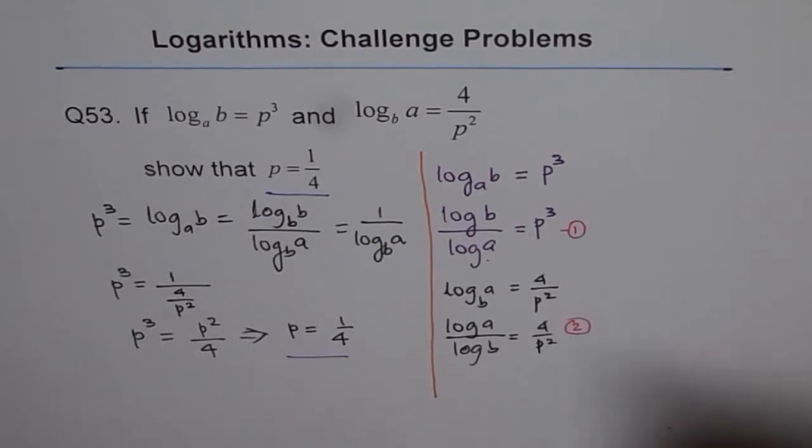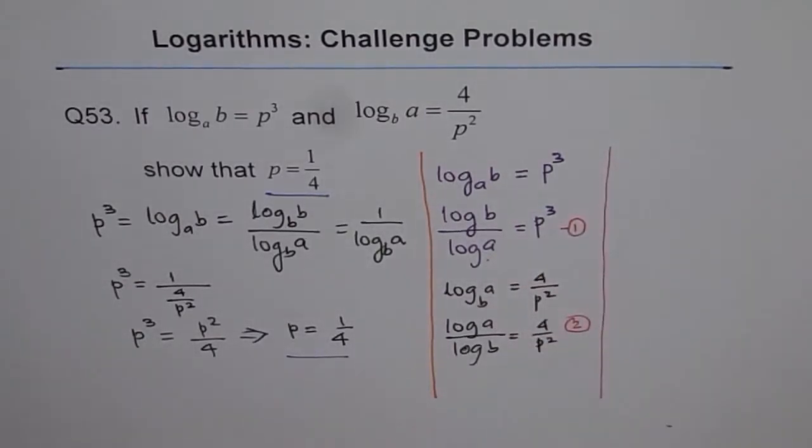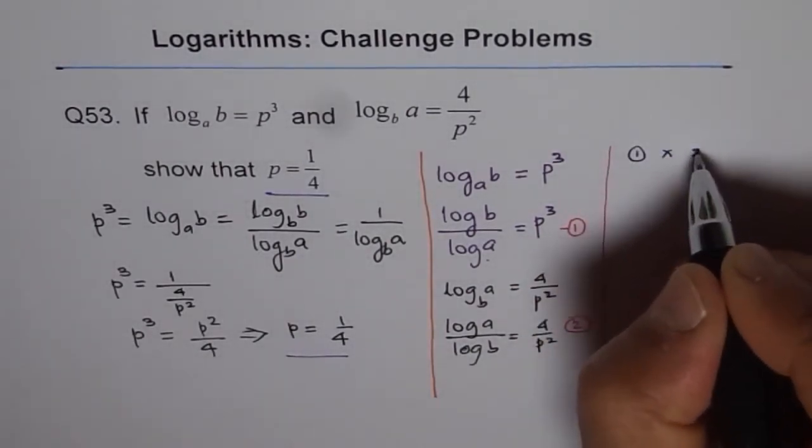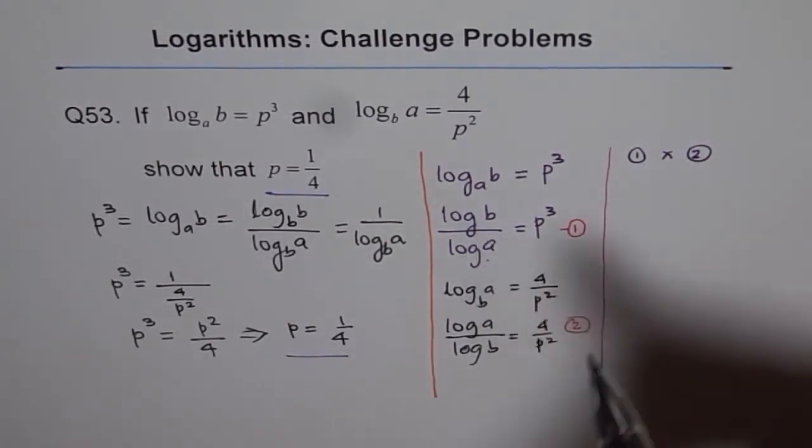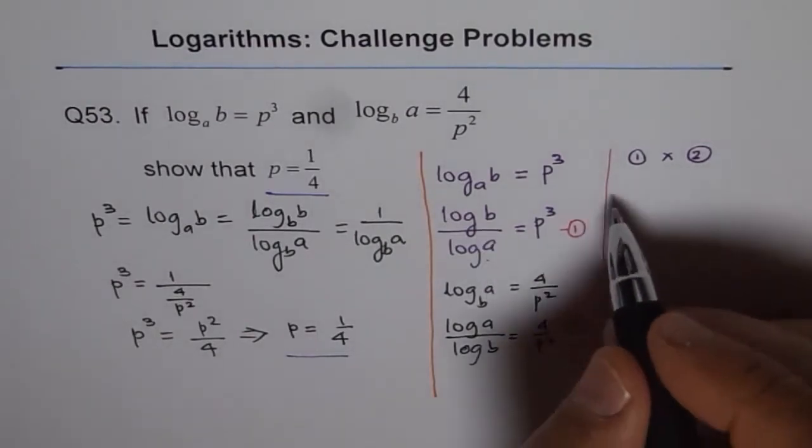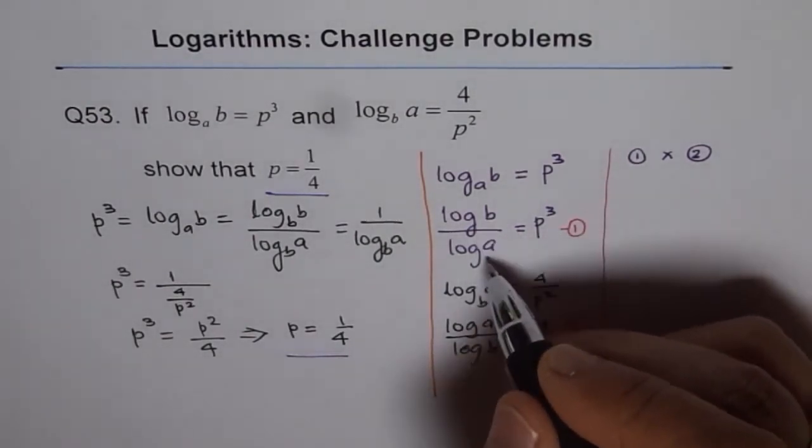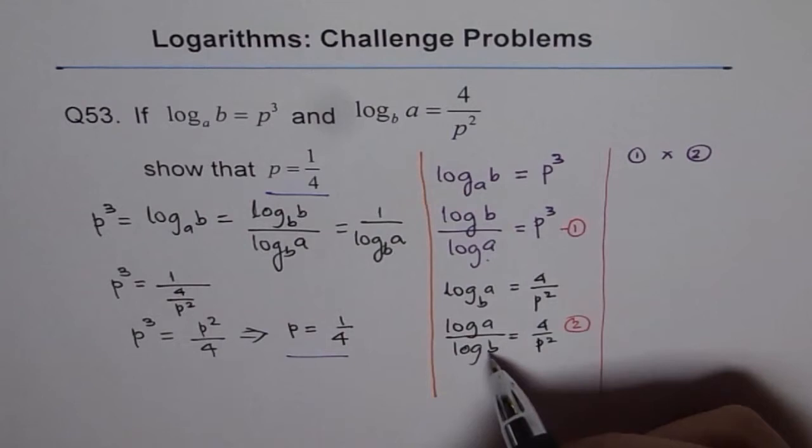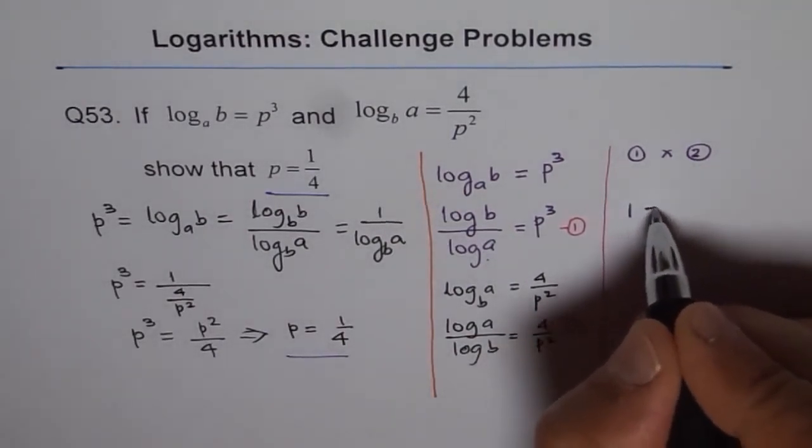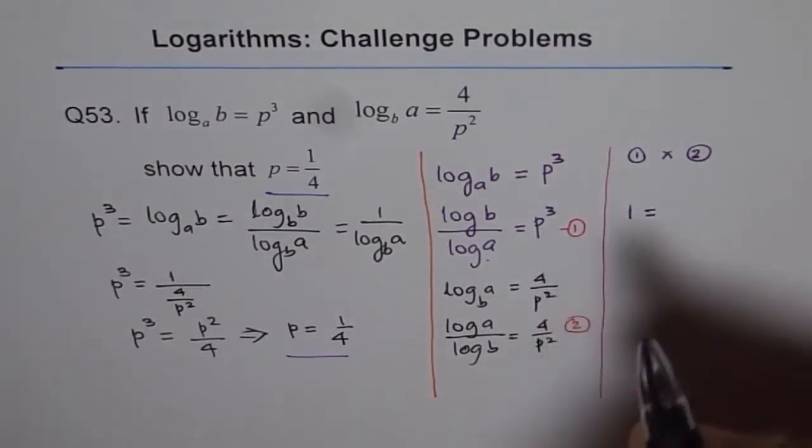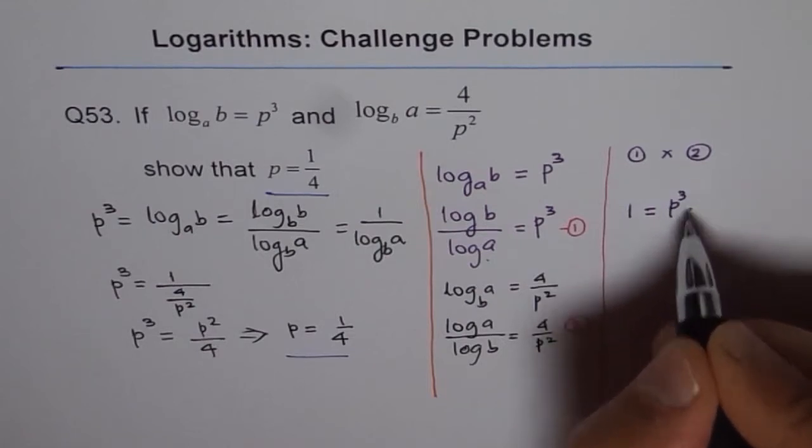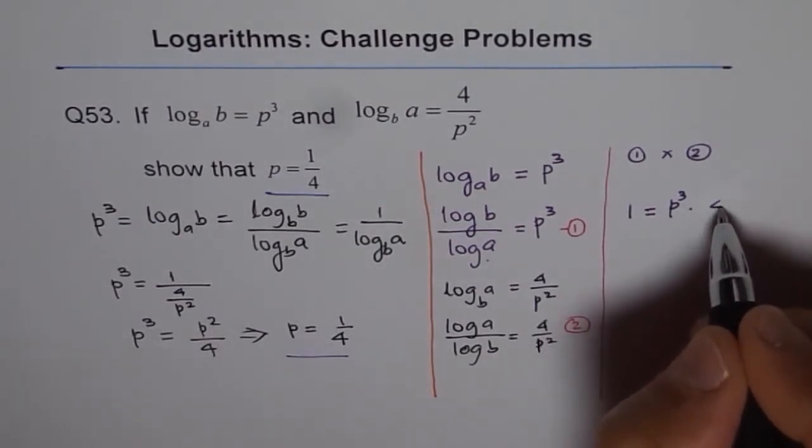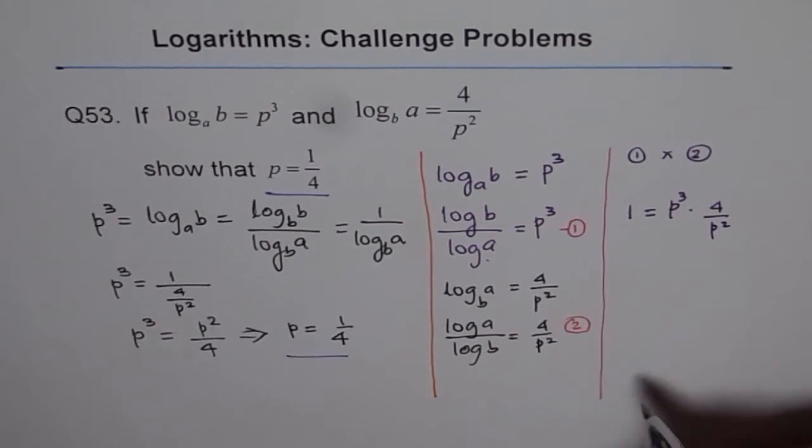So what I'm trying to do now is I'll do equation 1 times equation 2. So when I do this, then I have log B of A times log A of B, which is 1. So we get 1 equals P cubed times 4 over P squared, 4 over P squared.